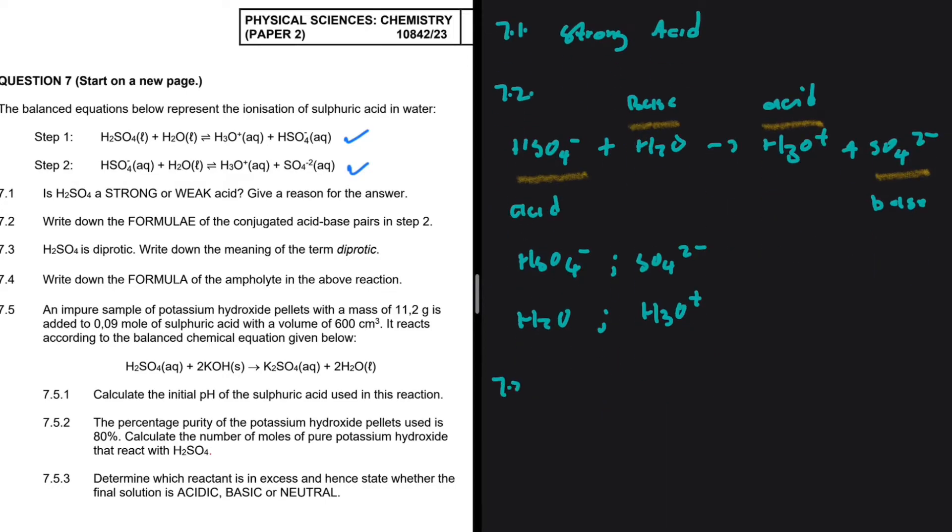7.3. H2SO4 is diprotic. Write down the meaning of the term diprotic. So let me show you what we mean when we say H2SO4 is diprotic. H2SO4 can give us 2H plus plus SO4 2 minus. So for one H2SO4, it can donate 2 protons. That's why we're saying that it's diprotic.